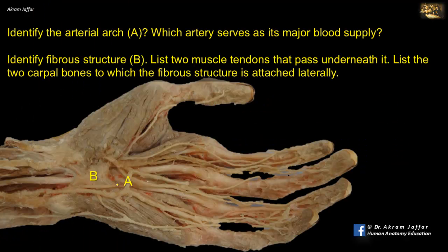Identify the arterial arch A and which artery serves as its major blood supply. Then identify structure B, list two muscle tendons that pass underneath it, and list two carpal bones to which the fibrous structure is attached laterally.